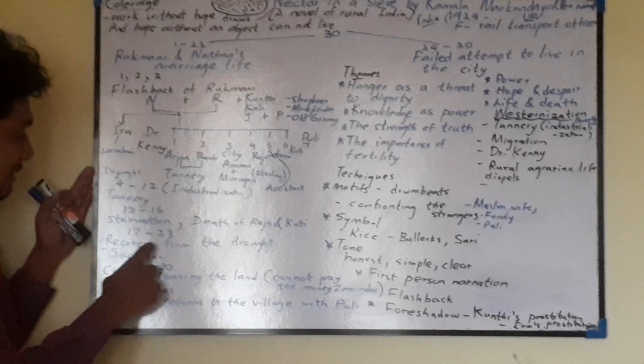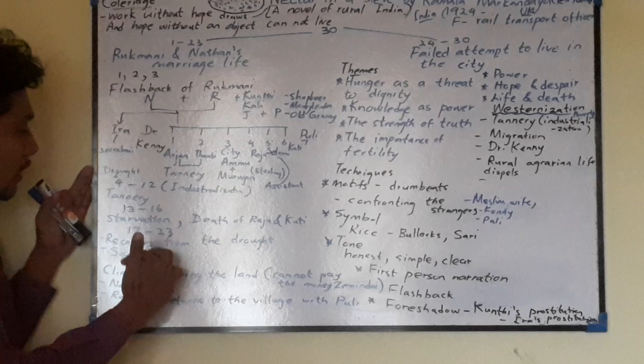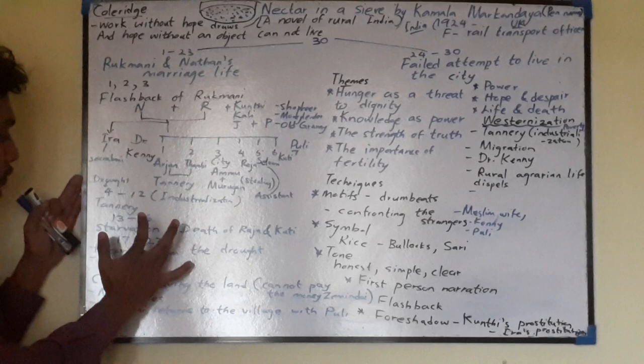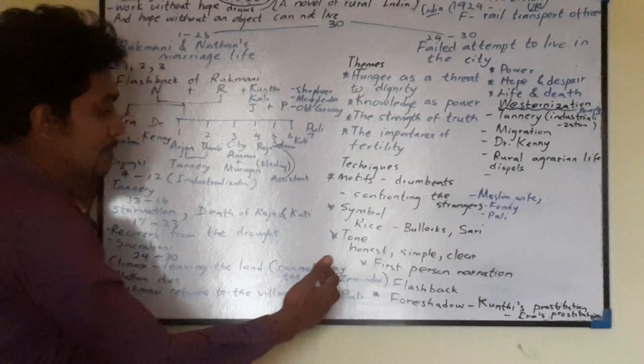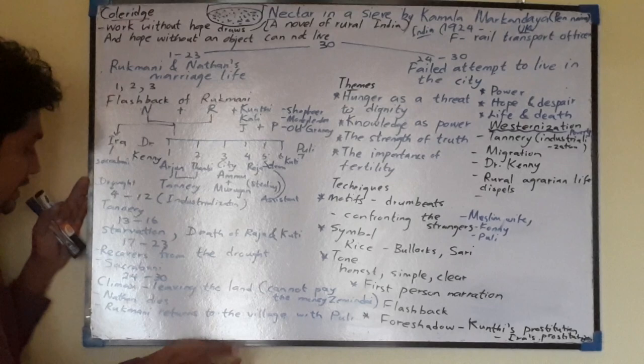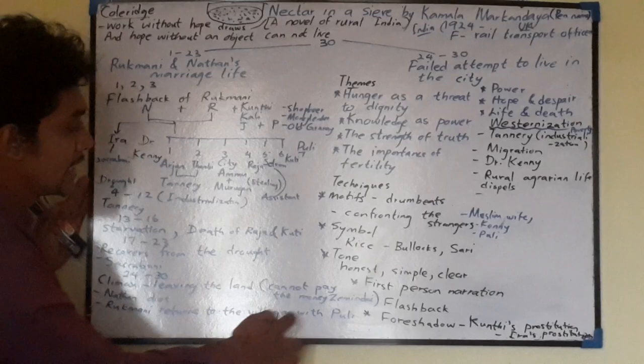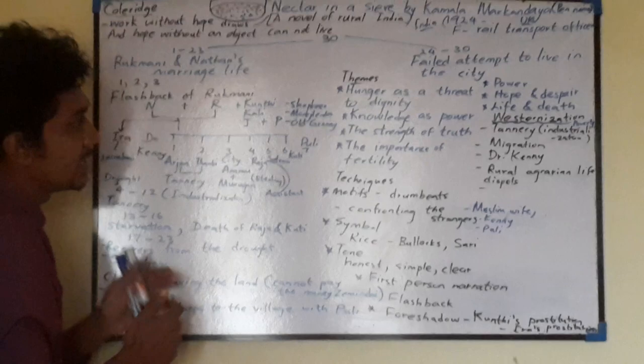In chapters 17 to 23, the people get some kind of a release from the environment, and we also see the birth of Sacrabani from Ira. In chapters 24 to 30, the crisis is leaving the land as they cannot pay the money back to Zemindar. Therefore they have to leave their family environment. After that, Nathan dies and Rukmani has to return to the village with Puli. That is a basic overview of the storyline.